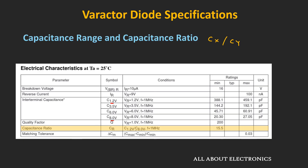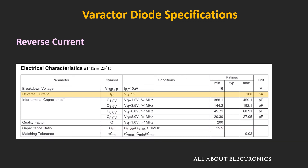For the hyper-abrupt varactor diode, it is possible to achieve a capacitance ratio greater than 10, while for abrupt diodes it is usually in the range of 2 to 3. For better tunability of a circuit, large capacitance ratios are desirable. Another specification is the leakage current or reverse current, which should be as minimum as possible. Similarly, breakdown voltage is an important specification — since varactor diodes are operated in reverse bias, the applied voltage must not exceed the breakdown voltage, as doing so can damage the diode.